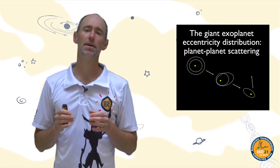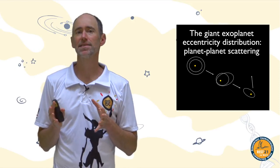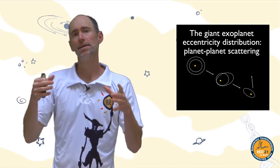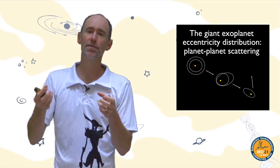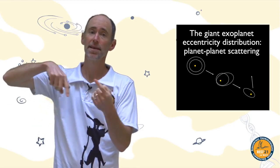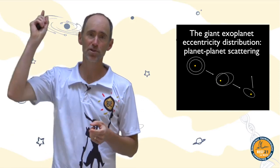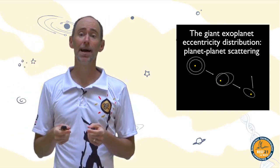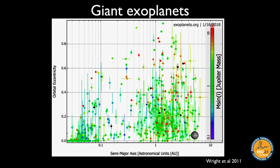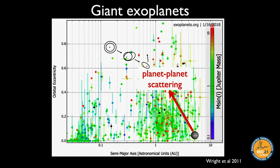Now let's look at the giant exoplanet eccentricity distribution. The key process here is thought to be planet-planet scattering. In this cartoon, two giant planets form on concentric circular orbits; in time their orbits gravitationally perturb each other, eventually cross, undergo a scattering phase, and one of them is ejected from the system. The survivor has a stretched-out, eccentric orbit. Scattering is thought to be key for moving planets up to higher eccentricities.